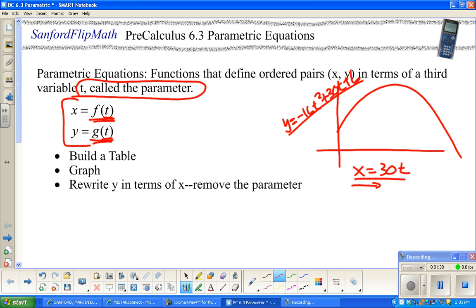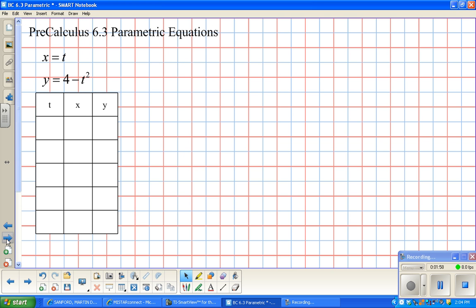There are really three things that we're going to do with this. One is we need to know how to build a table. Two, we need to know how to graph. And three, we need to be able to rewrite equations and eliminate the parameter. That's basically rewriting y in terms of x instead of y in terms of t.